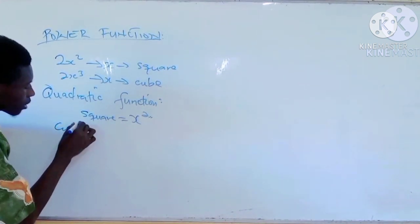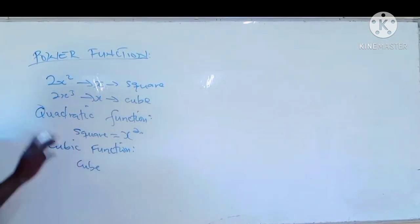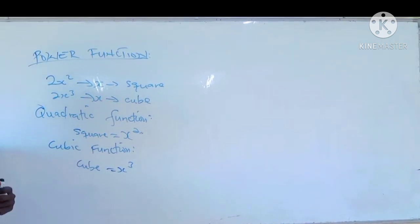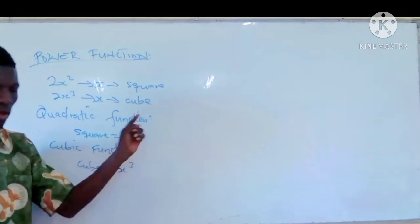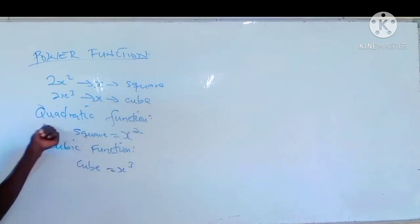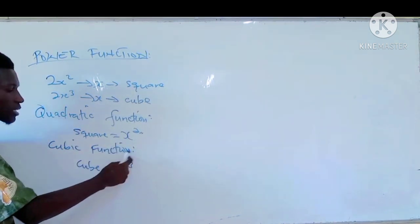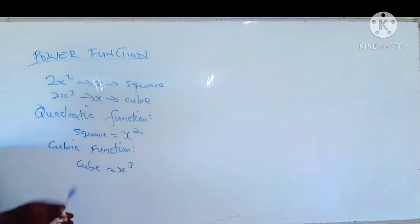We also talk about the cubic function. In a cubic function, the highest power is a cube — x is raised to the power of 3. Whenever you see that the highest power is a square, it's a quadratic function. Whenever the highest power is a cube, it's a cubic function.